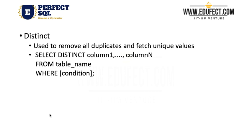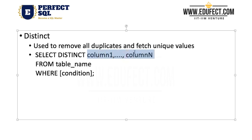Then there is Distinct. Distinct is used to remove all duplicates and fetch unique values. If you want to fetch unique values, we use Distinct. We specify it as: select Distinct, and before the column names we say distinct, so it removes all duplicates from those columns. If we have specified more than one column, all the values have to be the same across those columns for a row to be considered a duplicate.